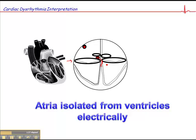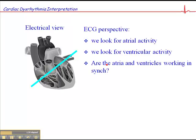This is why, from an electrophysiological perspective, we look at the heart this way. Instead of looking at it as a two-sided pump — right side and left side — we look at it as an organ with upper chambers and lower chambers. We're looking essentially for atrial activity in the form of a P-wave, ventricular activity in the form of a QRS, and whether the atria and the ventricles are working in sync — is there a P-wave representing electrical current in the atria coupled with a QRS, which represents electrical activity in the ventricles?